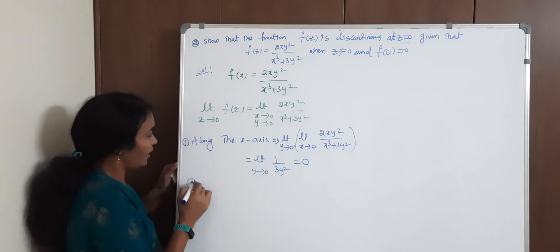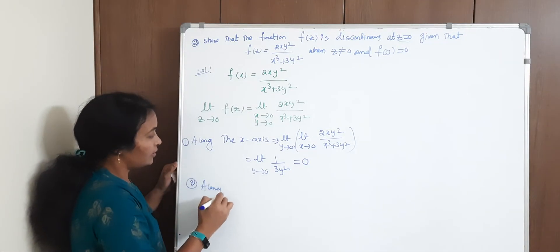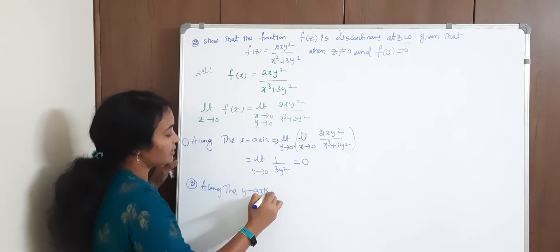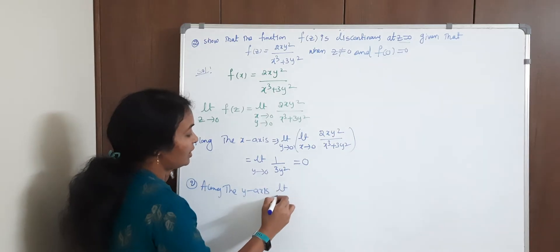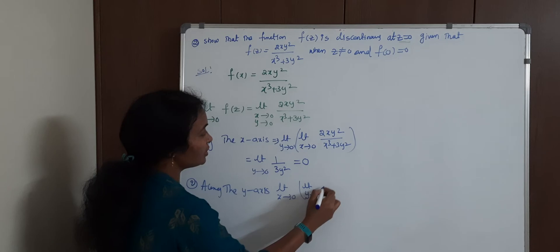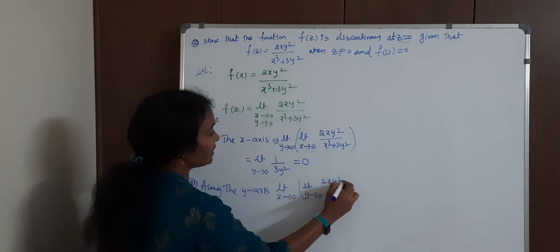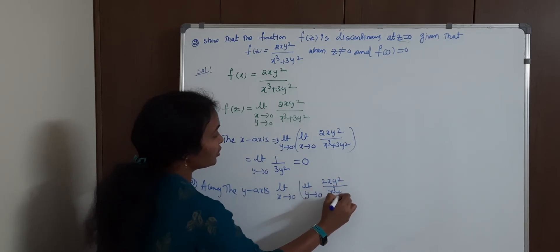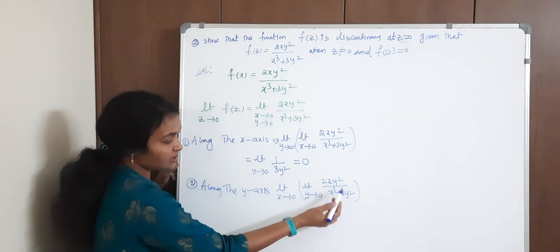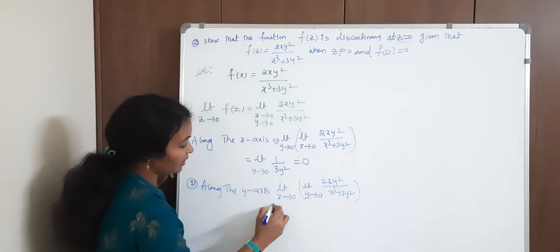Then, the next one is along the y-axis. What is our y-axis? Limit x→0 and limit y→0, 2xy² / (x³ + 3y²). First, y→0, substitute this. This is 0 and this is 0.